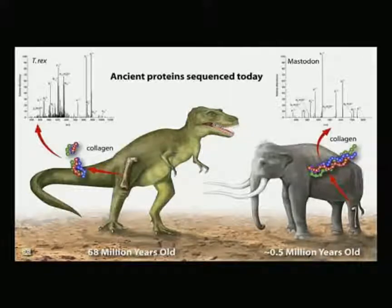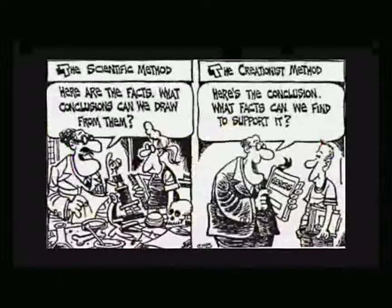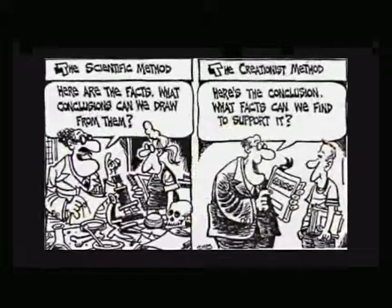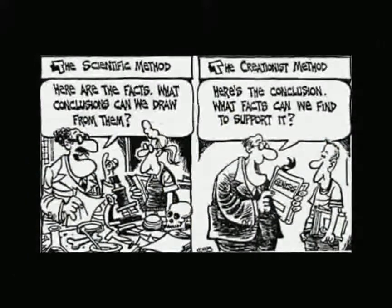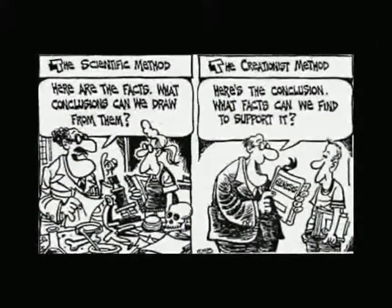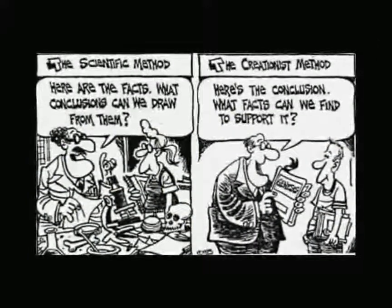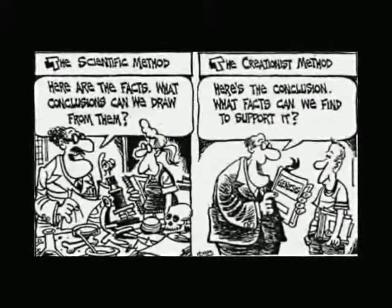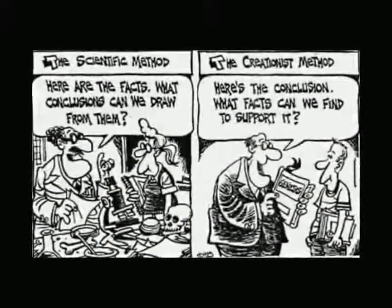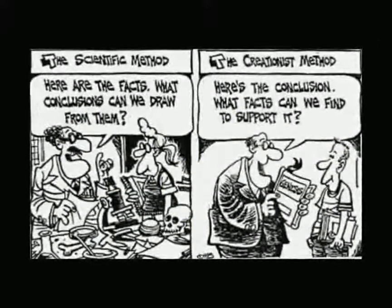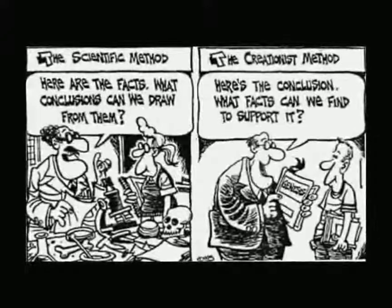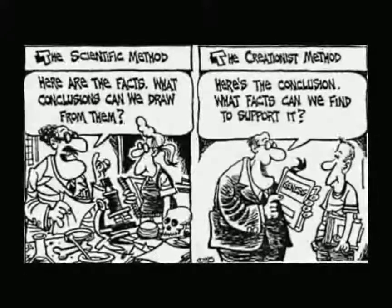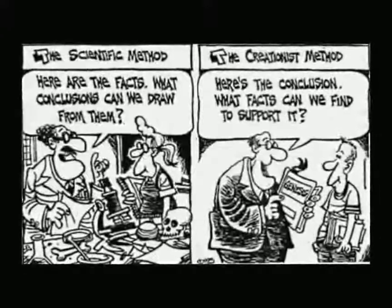It is for these reasons that intelligent design has been falsified as a scientific theory. If it were any other theory, people would look at the contradicting evidence and say: we think this, but all the evidence contradicts it — so we're wrong. What can we learn from it? What is the right answer? That is what would happen if intelligent design were a genuine scientific theory.